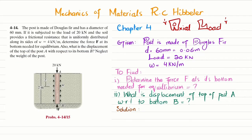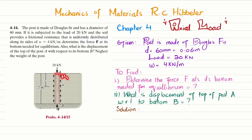Also, determine the displacement of the top of the post with respect to its bottom; neglect the weight of the post. You can see this is the post made of wood — Douglas Fir — subjected to a 20 kilonewton load. The soil provides frictional load w = 4 kilonewton per meter, uniformly distributed. You have to find force F for equilibrium, and then determine the displacement of point A with respect to point B.